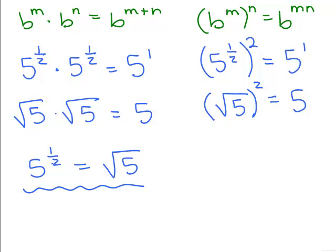In fact, if you have any number to the 1 half, it really is just going to be the square root of that number. So if I had 16 to the 1 half, that would mean the square root of 16. And what's the square root of 16? It's 4. Again, remember that we take the principal square root, the non-negative one.